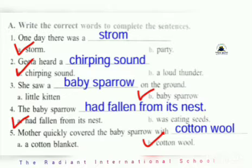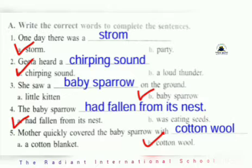Then she saw a blank on the ground — little kitten or baby sparrow? Baby sparrow. So we have to write B-A-B-Y, baby, S-P-A-double-R-O-W, baby sparrow. Then the baby sparrow had fallen from its nest or was eating seeds? It had fallen, so: had fallen from its nest. Then mother quickly covered the baby sparrow with — cotton wool or cotton blanket? Cotton wool. So we write C-O-double-T-O-N, cotton, W-double-O-L, wool — cotton wool.